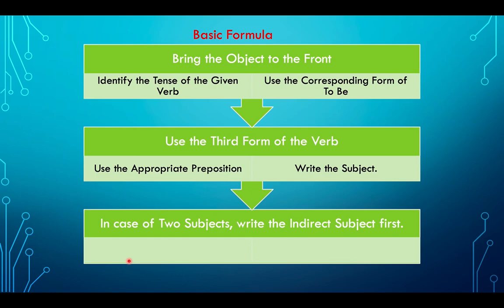This is the basic formula for the entire exercise. First: bring the object to the front. Second: identify the tense of the given verb. Third: use the corresponding form of 'to be'. Many students say they don't understand these two points because they don't know how to identify the tense and which corresponding form of 'to be' to use.